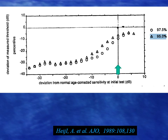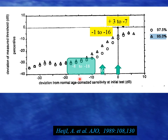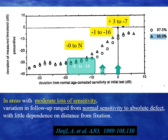The authors found the following: if a location has sensitivity near normal, the fluctuation between tests is between plus 3 and minus 7. If the sensitivity is depressed by 6 below normal, the fluctuation can range from minus 1 to minus 16. And if the sensitivity is 8 up to 18 below normal, the fluctuation can span the full range from zero to the full threshold. So in areas with moderate sensitivity loss, variation in follow-up ranges from normal sensitivity all the way to absolute defect. This wide range of fluctuation is independent of the location of the test point.